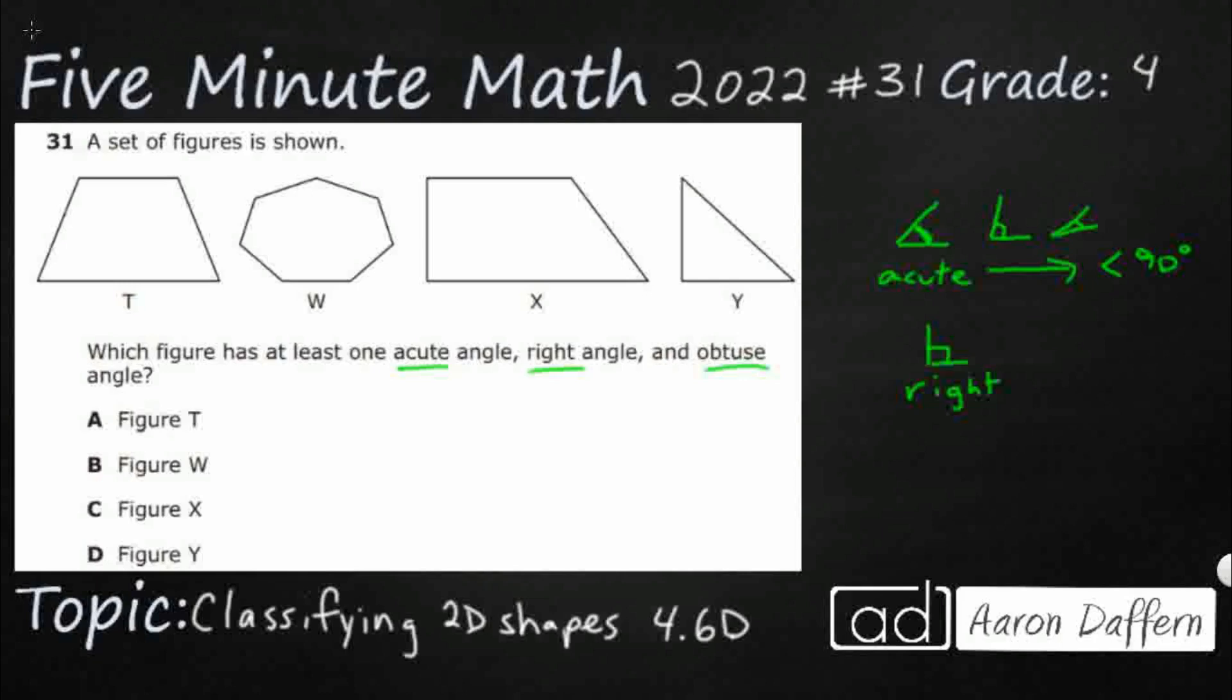They can't be acute or obtuse. So, obtuse is going to be this angle that is larger than 90. So it can be really, really big like that, or it could just be just a little bit above 90. But anything that's above 90 is going to be greater than 90. So those are the three types of angles that we're learning about here.